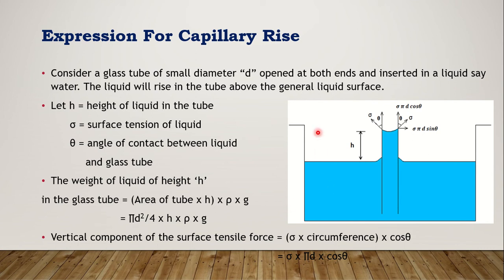Let's derive the expression for capillary rise. I'll take a tub of water and place a glass tube inside it, open at both ends — remember, the capillary tube is open at both ends. Water slowly rises up beyond the general level, and that rise is denoted by small h. From one side water enters, and the other side is open to air.